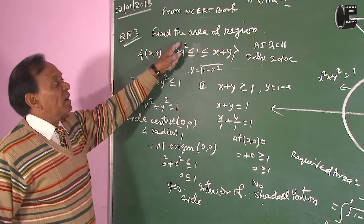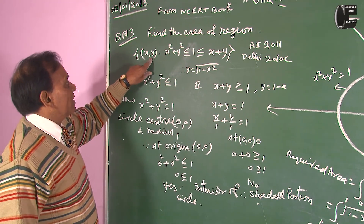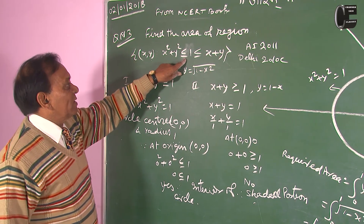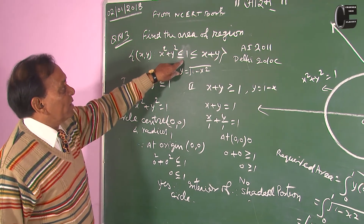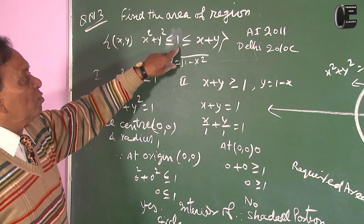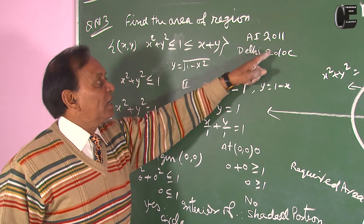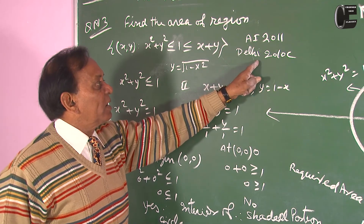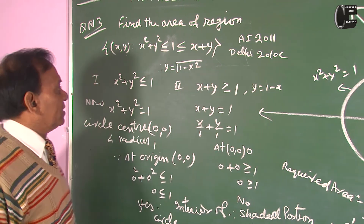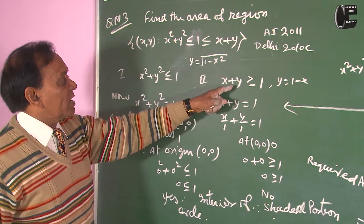Question number 3: Find the area of the region — set of all (x, y) such that x squared plus y squared less than or equal to 1, and x plus y greater than or equal to 1. This question was asked in the year 2011 and has evolved into a standard curve problem.